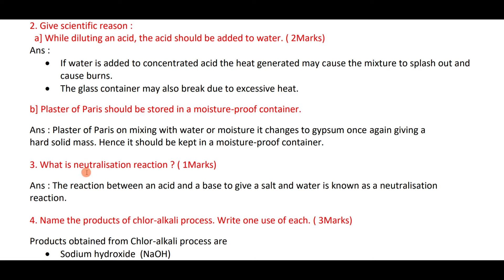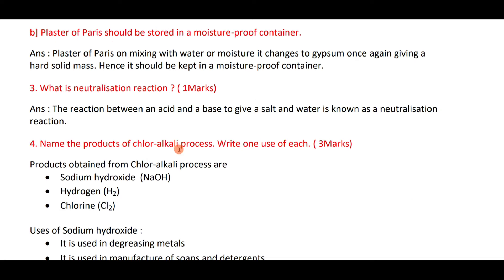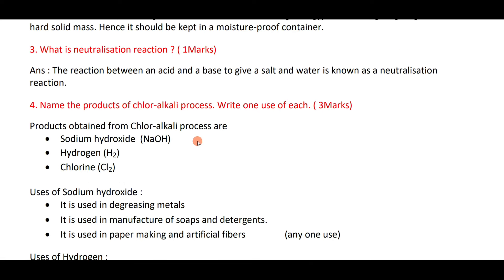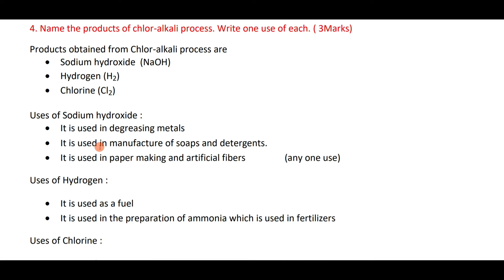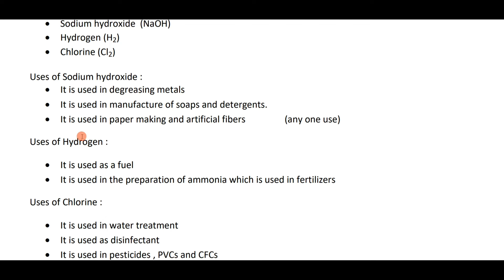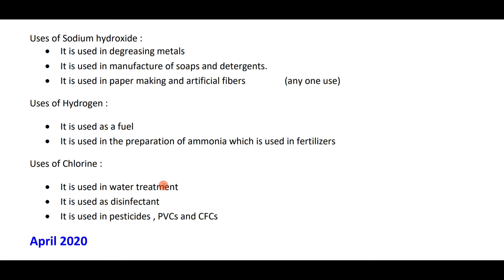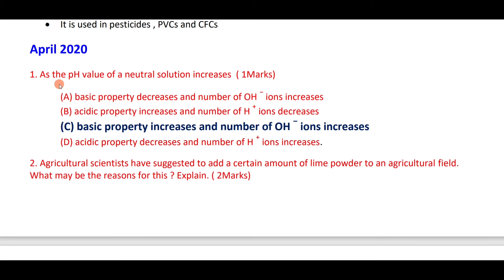The products of the chloralkali process are sodium hydroxide, hydrogen, and chlorine. Uses of sodium hydroxide: degreasing metals, manufacture of soaps and detergents, paper making and artificial fiber. Uses of hydrogen: used as fuel, preparation of ammonia for fertilizers. Uses of chlorine: water treatment, disinfectant, pesticides, PVC, CFCs.